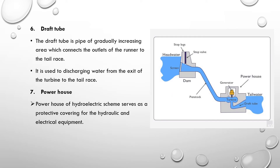This is the draft tube. The draft tube is a pipe of gradually increasing area which connects the outlet of the runner to the tailrace. It is used to discharge water from the exit of the turbine to the tailrace.